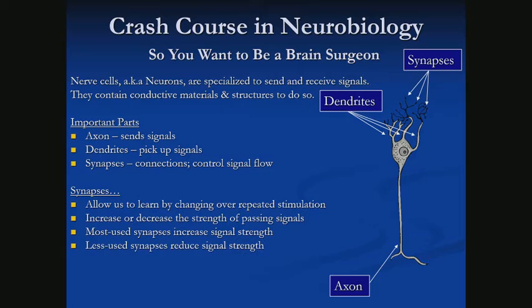When dendrites and synapses go unused, the synapse reduces — it lowers the amount of signal that can go across. Basically, every time a signal goes across, it reinforces itself. And over time, when it does not have signal going across, it negatively reinforces itself.